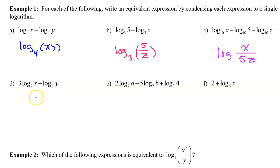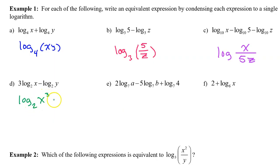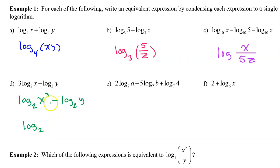Part d has two terms to it. I would love to combine these into a single term, but before I do, I need to take this 3 that's in the front and move it to the exponent using the power property. So I can rewrite this as log base 2 of x to the third power. Then I'm going to bring down the minus log base 2 of y, and now I can combine these into a single log base 2. The subtraction tells me that it's going to be the quotient of x to the third power over y.